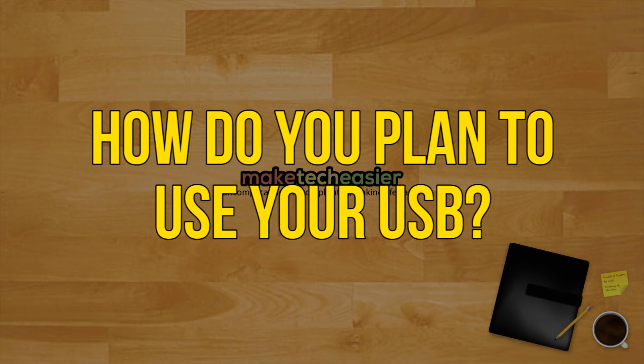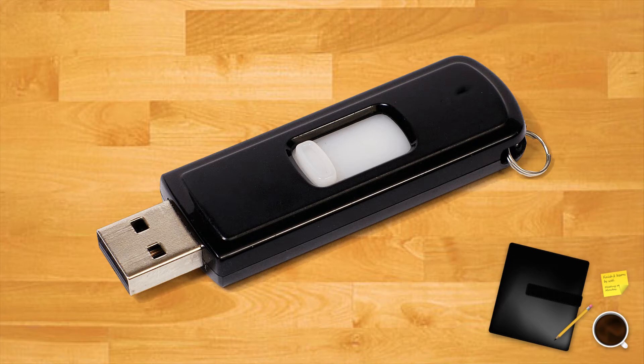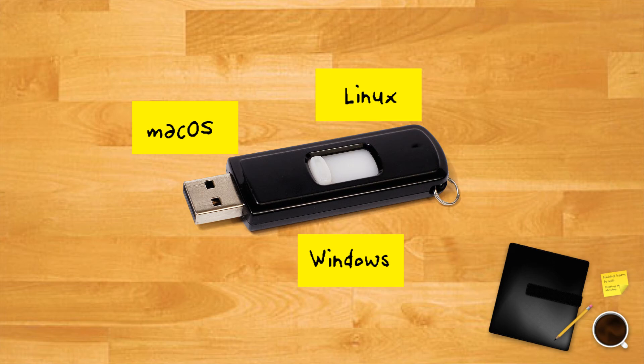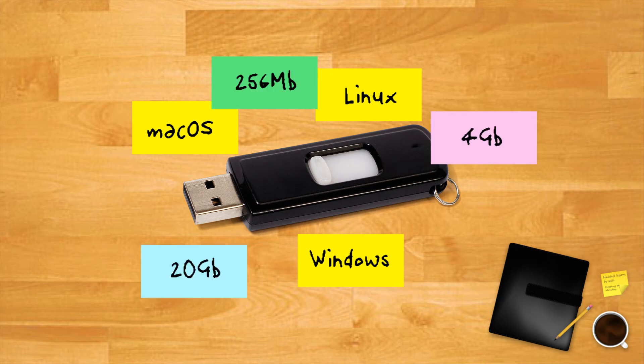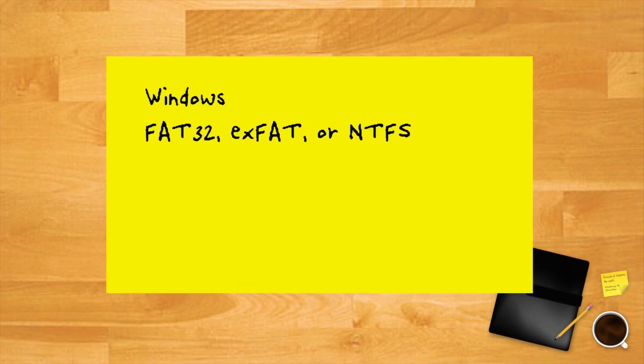Basically the most important considerations regarding your choice of a file system for your USB drive are which operating systems you plan to use it with and how large the files you will most likely transfer are. If you'll be using your USB media mostly on Windows devices, you can go with FAT32, exFAT, or NTFS. FAT32 and NTFS run with Linux too, but exFAT requires additional tools.